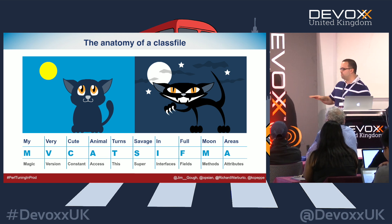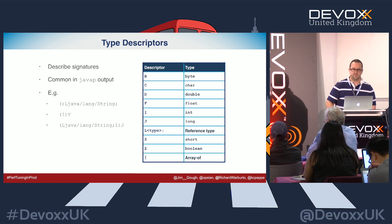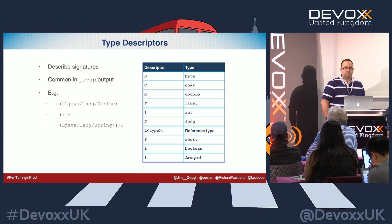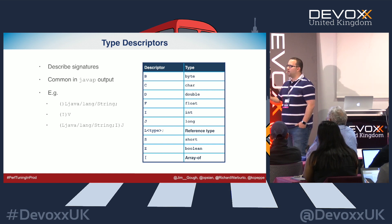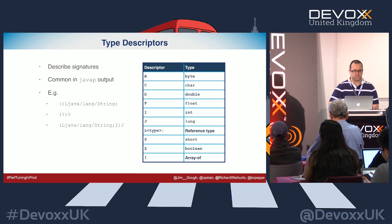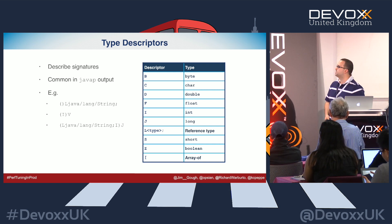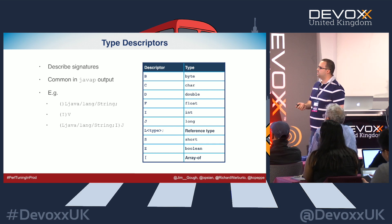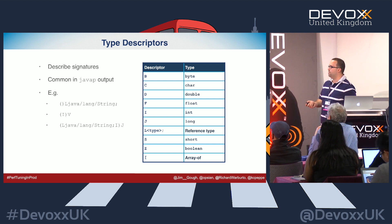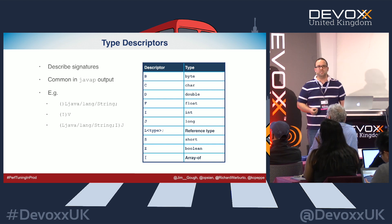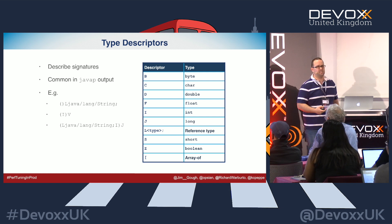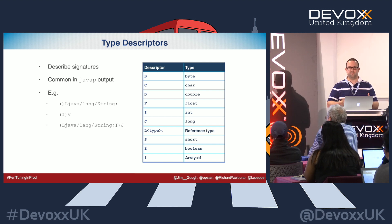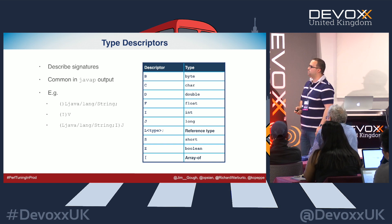The operations in the class file are all prefixed by something that describes them. Looking at javap output, you can start to read what signatures actually do. For instance, 'L' is a reference type, 'I' is an int. These things let you structure what signatures look like. Operators are prefixed by a type and grouped into families of how those bytecodes would actually work.